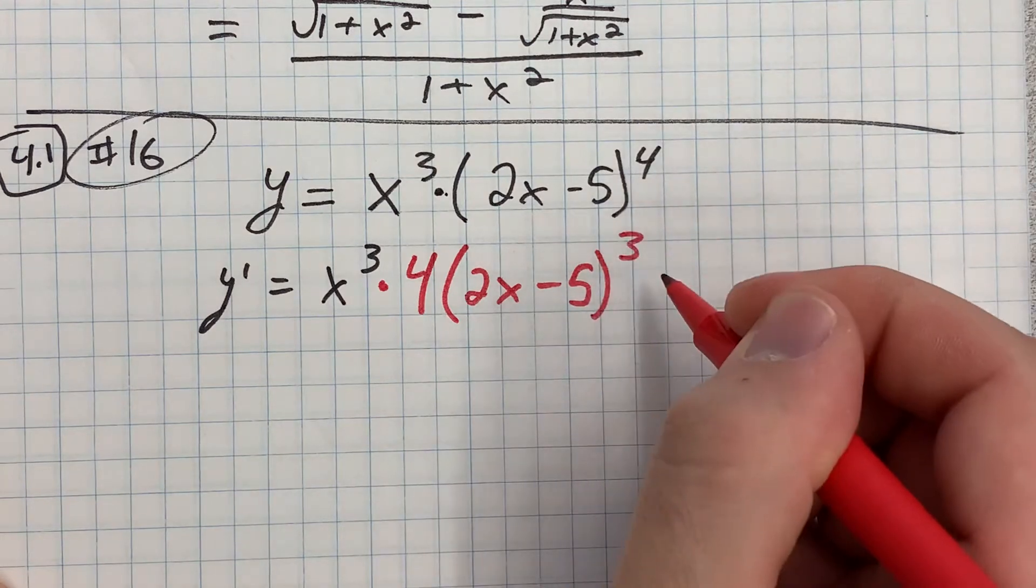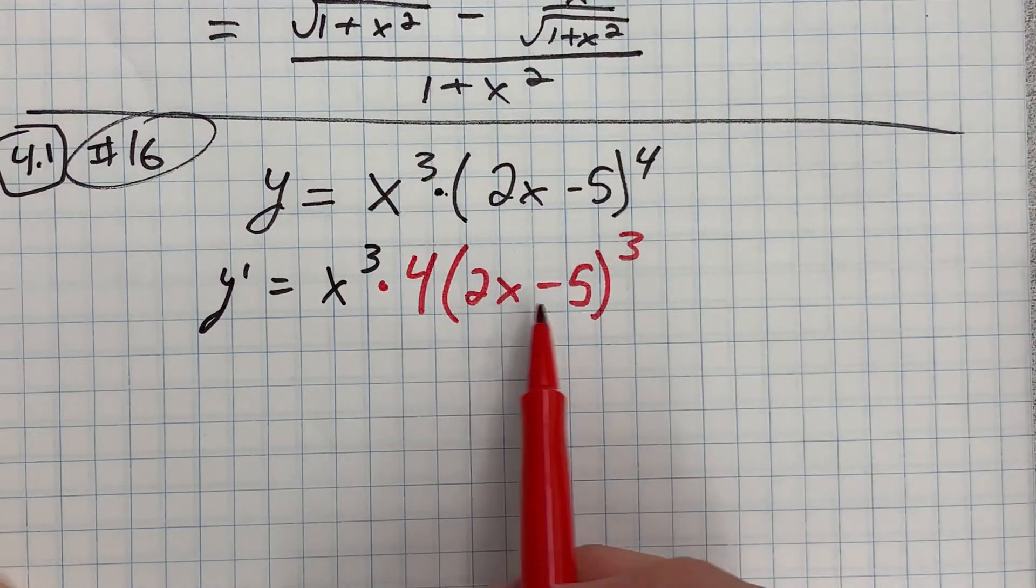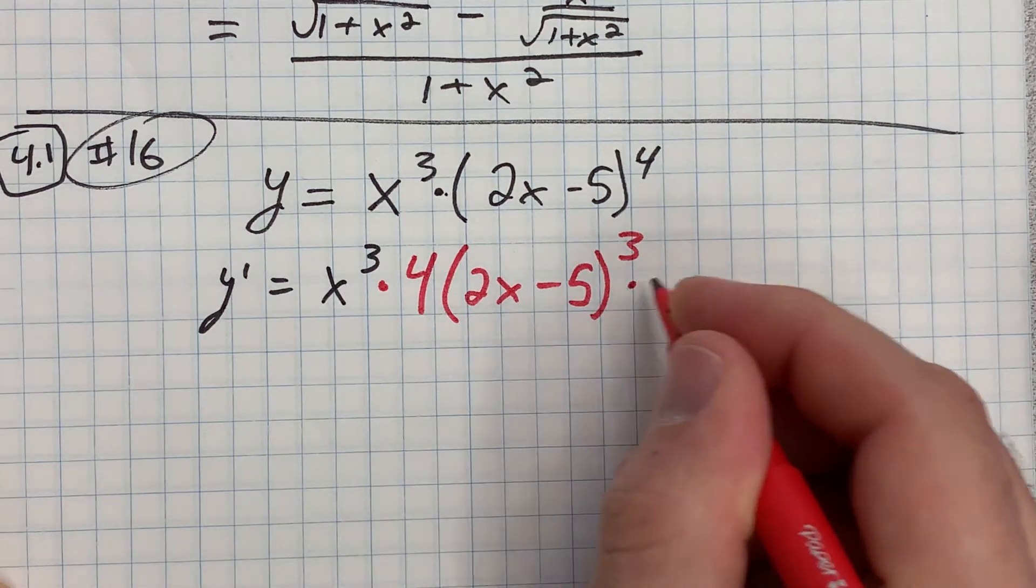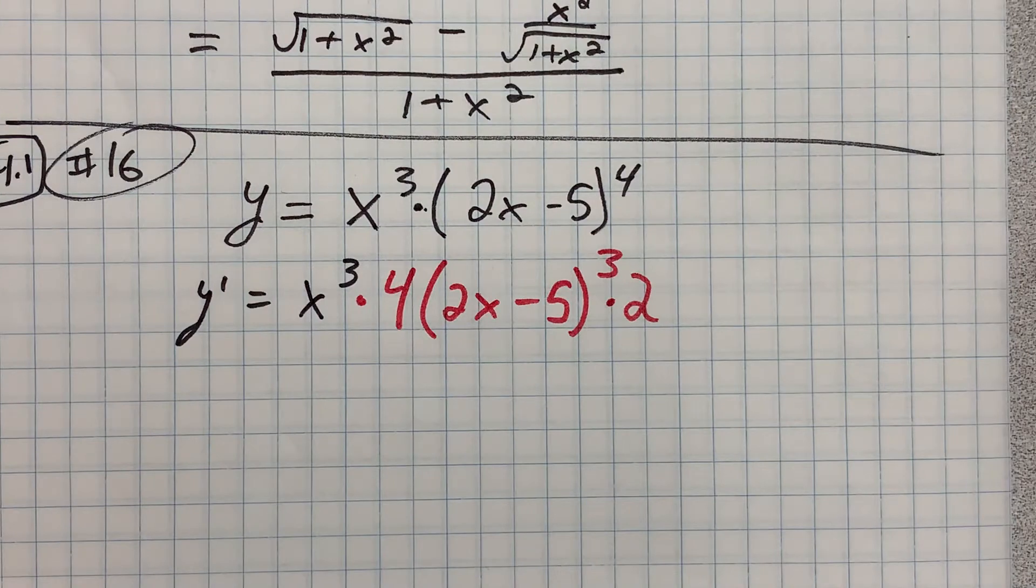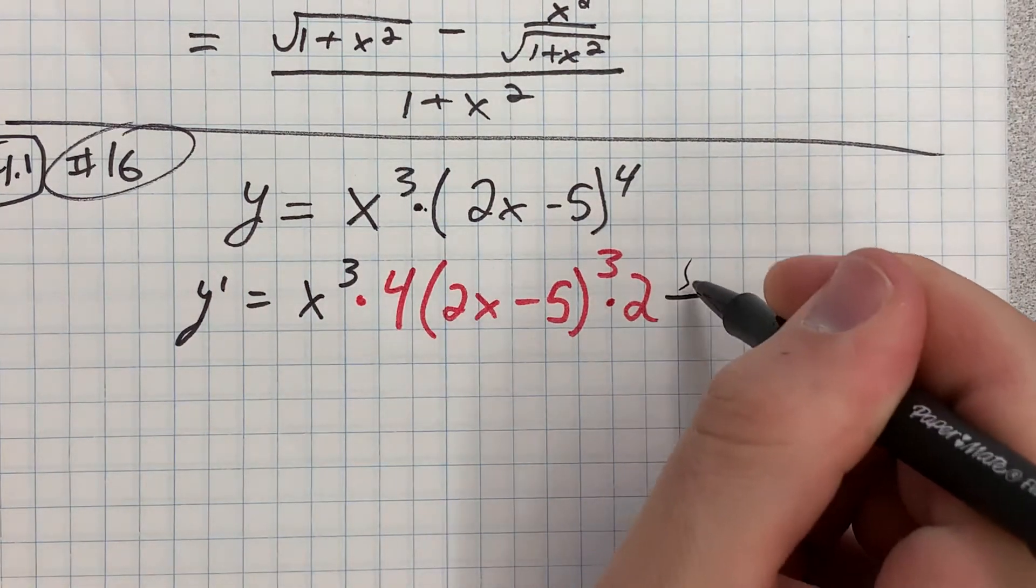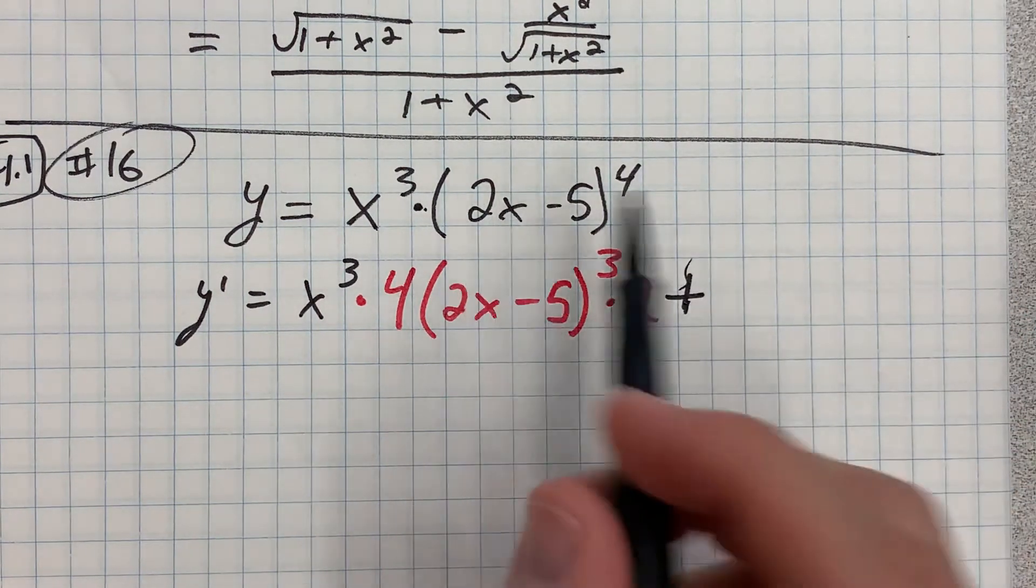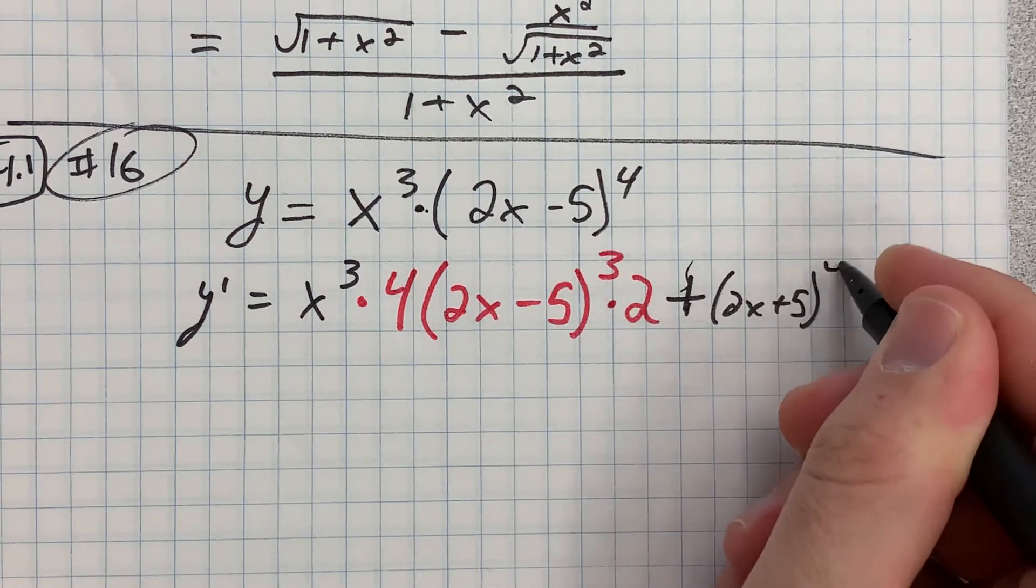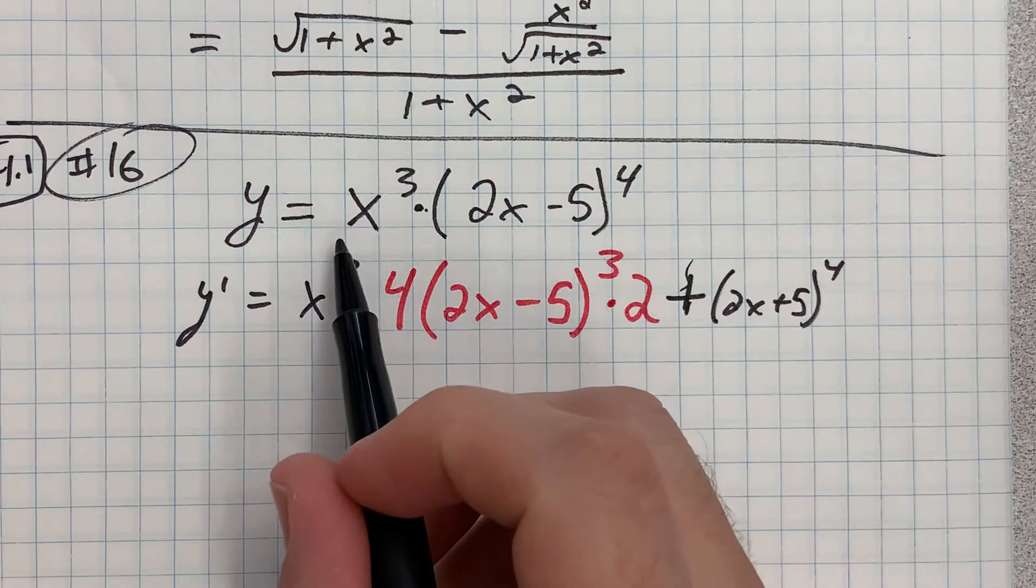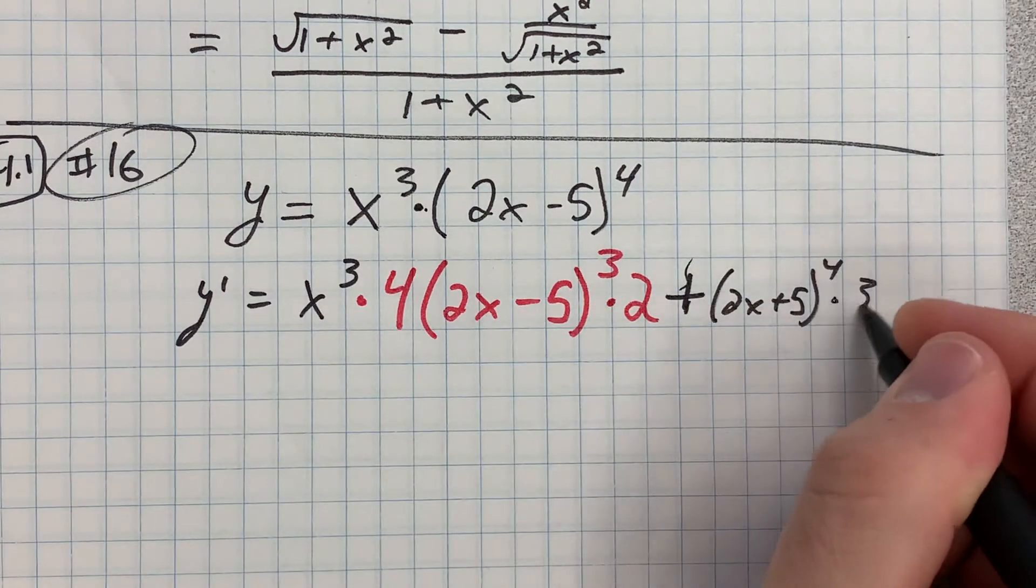Subtract one from the power, times the derivative of the inside. So derivative of 2x minus 5 is going to be 2, plus the second times the derivative of the first, which is 3x squared.